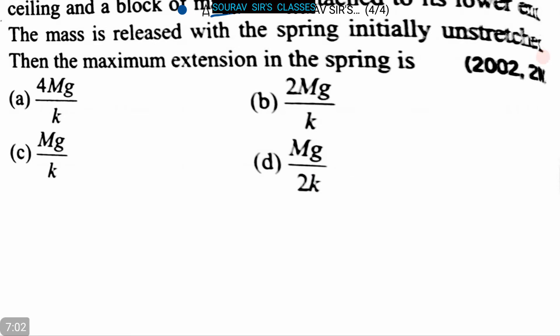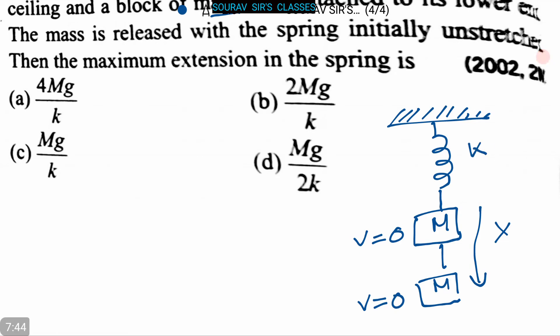Four options are: option A, 4Mg/k; option B, 2Mg/k; option C, Mg/k; and option D, Mg/2k. Let us draw the figure first. This is the spring, here is the block with mass M. This is x where velocity is zero, and the constant is k.